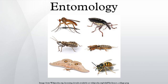Entomology is the scientific study of insects, a branch of arthropodology. In the past the term insect was more vague, and historically the definition of entomology included the study of terrestrial animals in other arthropod groups or other phyla, such as arachnids, myriapods, earthworms, land snails, and slugs.